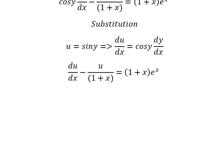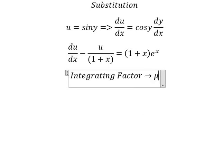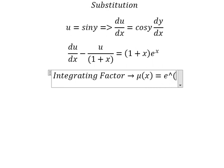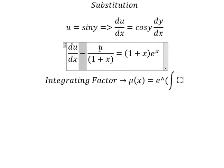Next, we have u and first derivative of u. We can use the integrating factor. So we have mu equals to e to the power of the integral. So we see that negative 1 over 1 plus x. That is the integrating factor.